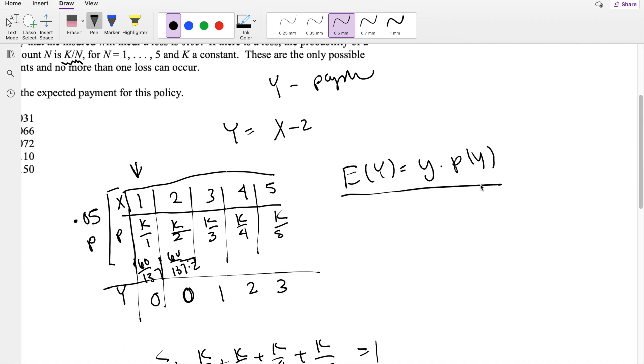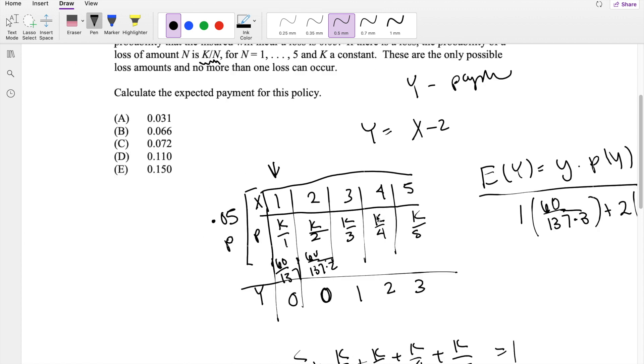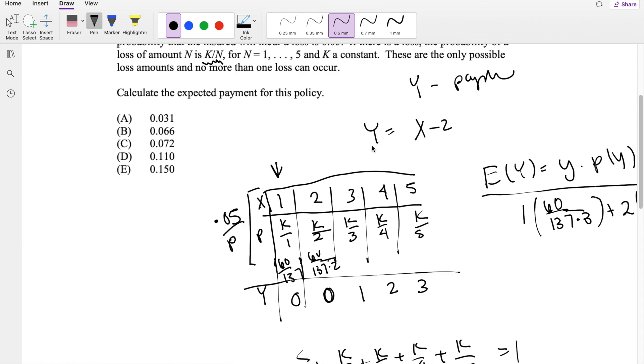So expectation of Y equals Y times probability of Y. This is Y, which is 1, times K over 3, where K equals 60 over 137. So 60 over 137 times 3 plus 2 times 60 over 137 times 4 plus 3 times 60 over 137 times 5. And remember, this whole thing is multiplied by 0.05 because that's the probability.